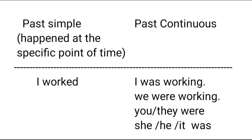There are two basic tenses: the simple past tense and the past continuous tense. The simple past tense is commonly used with past time adverbs like yesterday, last week, last year, etc. We use the past simple to talk about events, states, or habits at a definite time in the past. The past simple emphasizes the event that happened at a definite time in the past. For example: I worked — it happened at a specific point of time in the past.